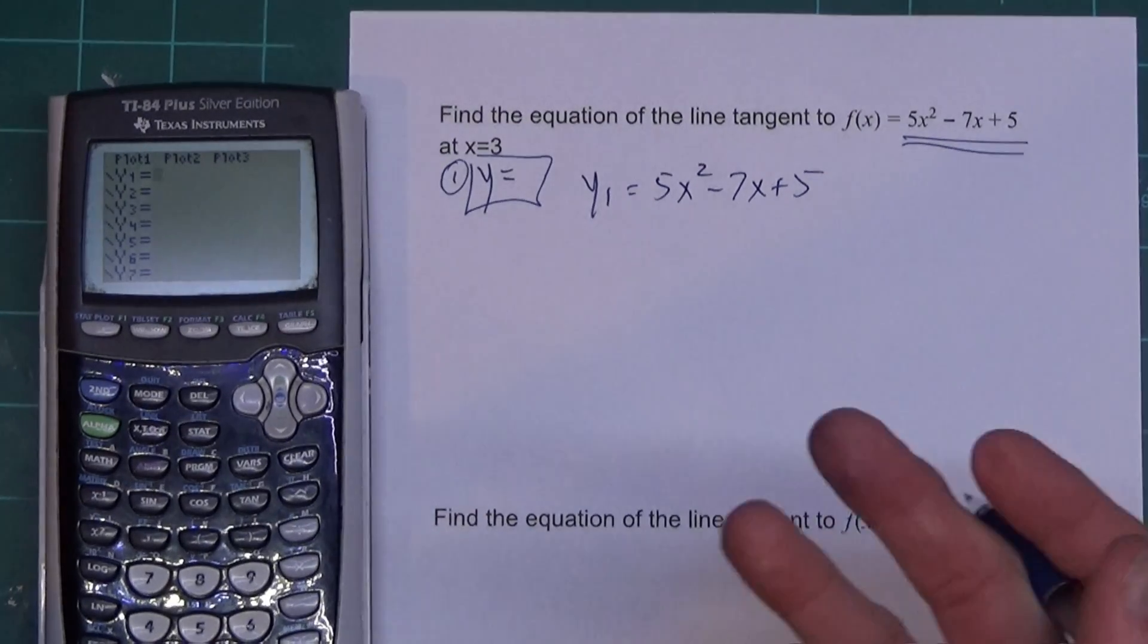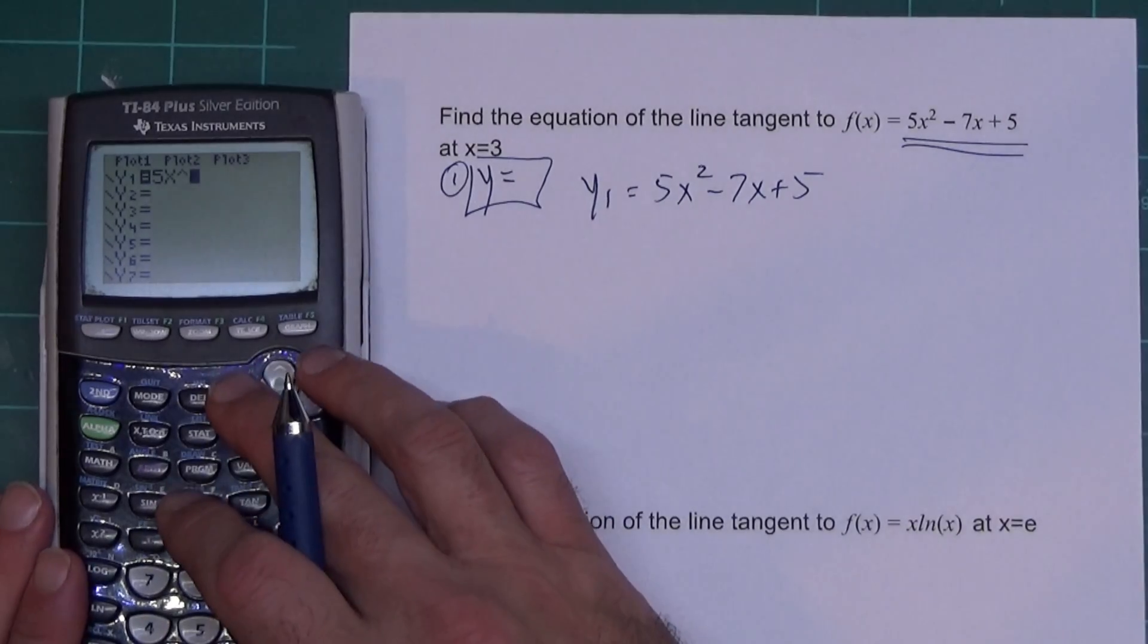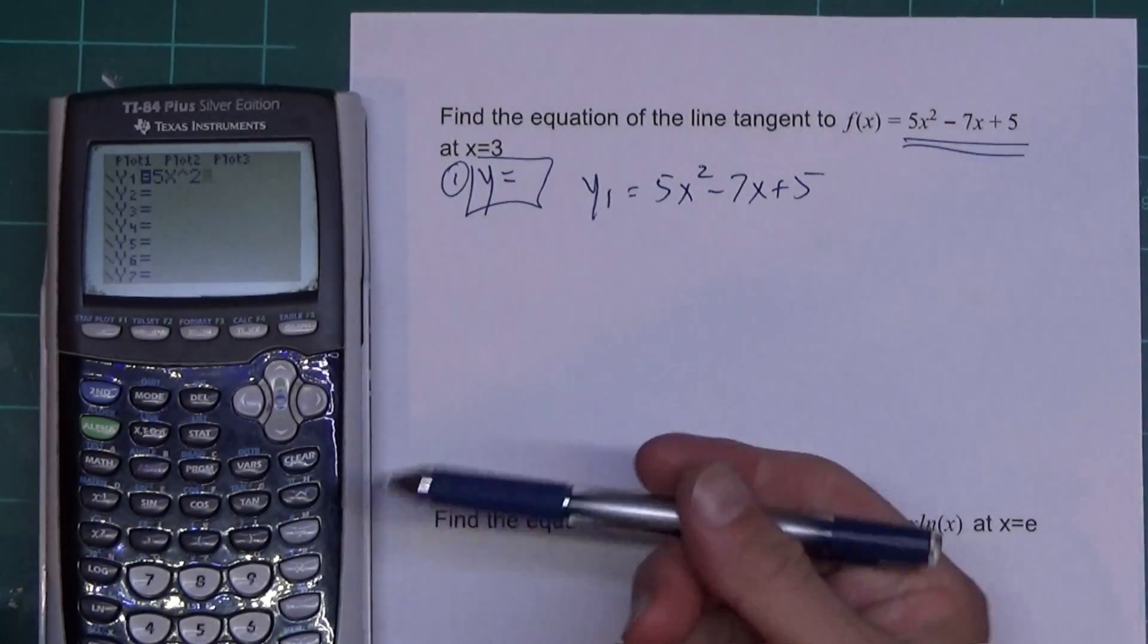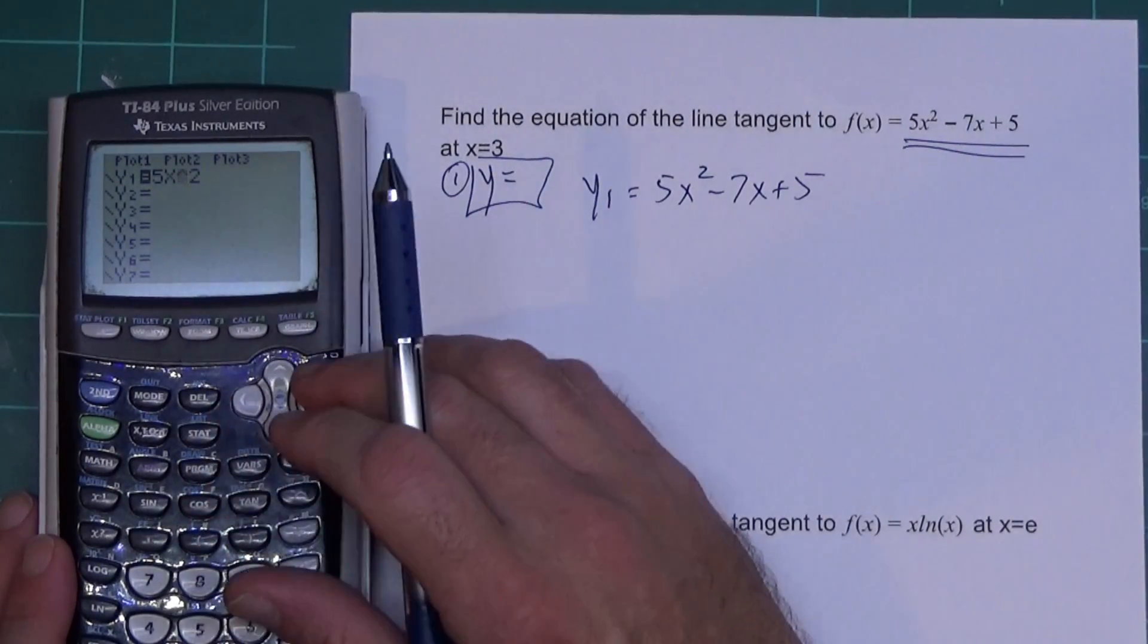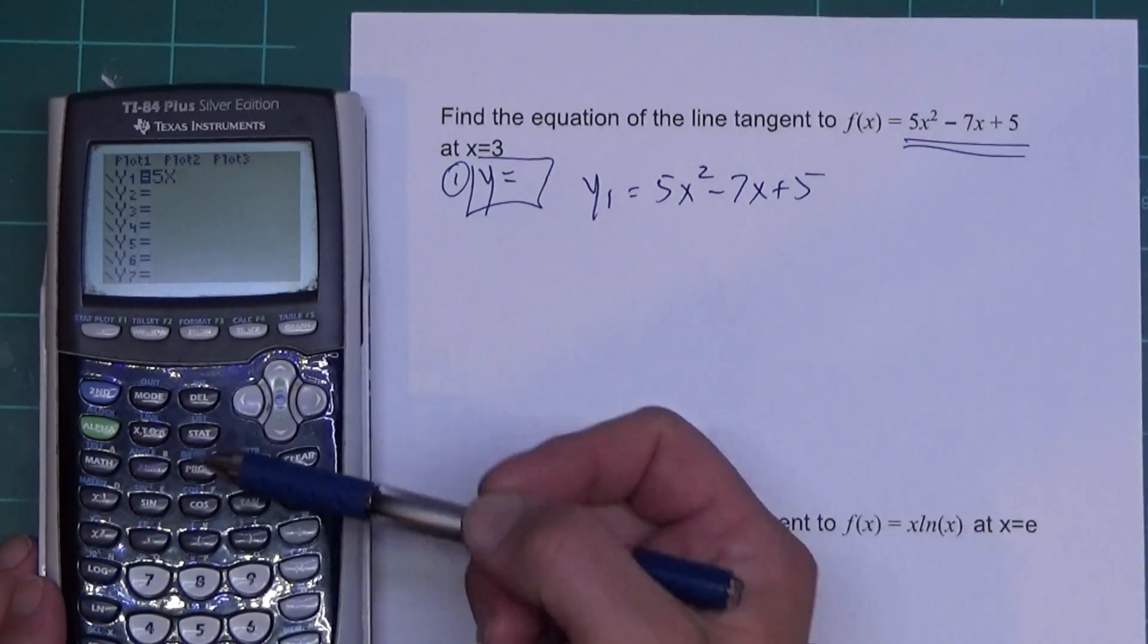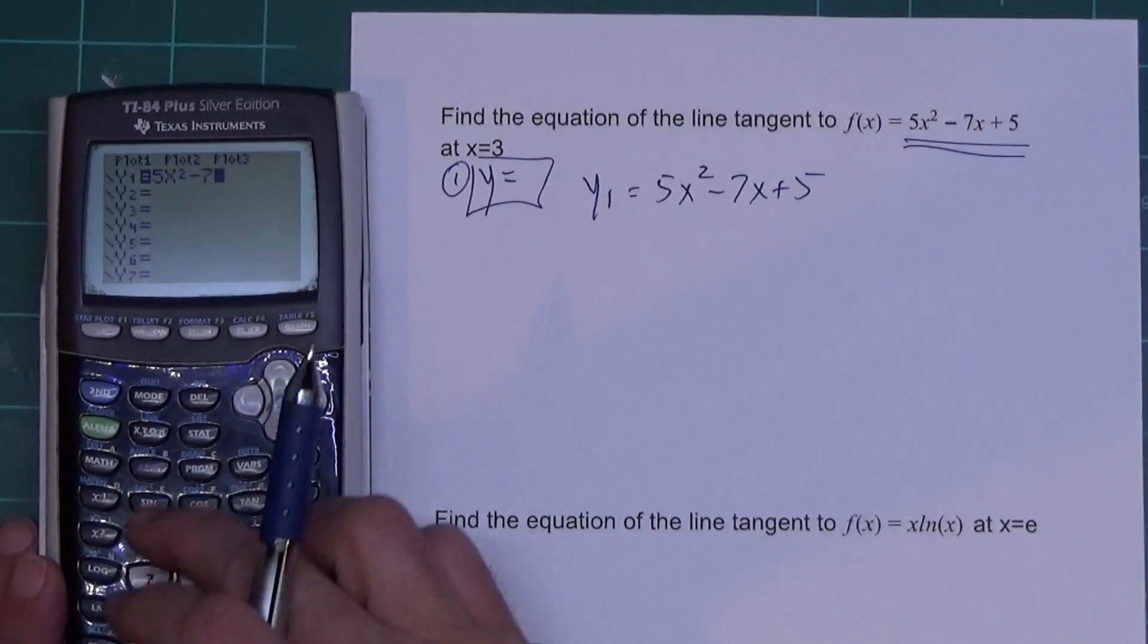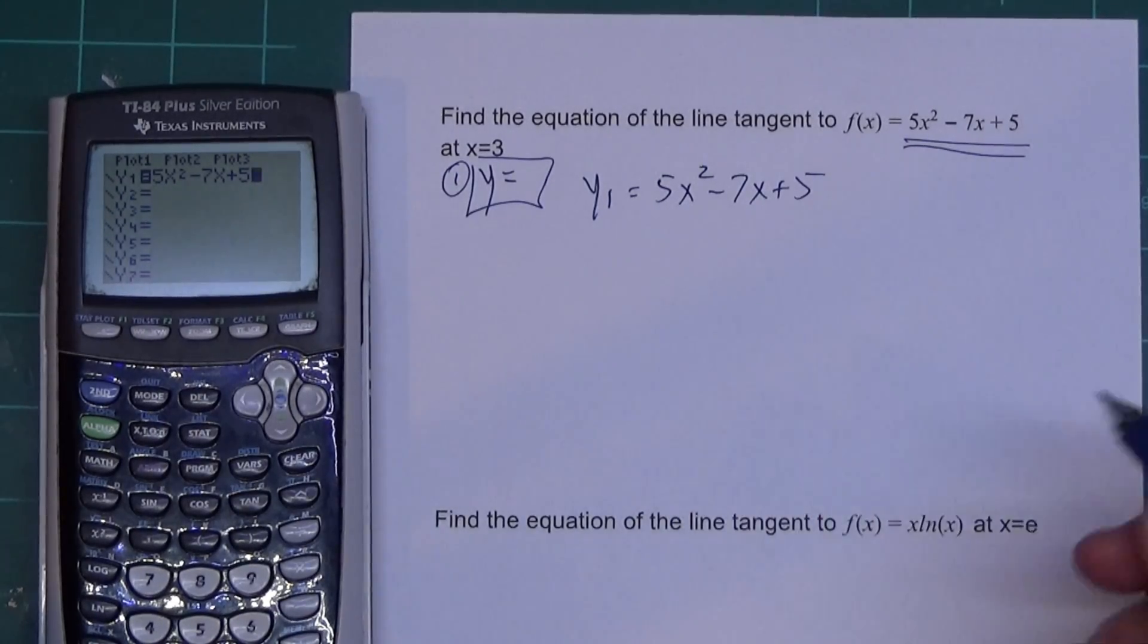This is the one thing that's really different between the new calculators and the old is when I type in the 5x squared. The 83s and the older 84s want it typed this way. The newer 84 is when you hit the square button, it puts a superscript in. The other way to do it is I could hit 5x, and remember that's the X button, and I can hit the squared button here. Now that looks the same way it would for both calculators. Minus 7x plus 5. Got that in the calculator.